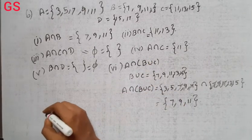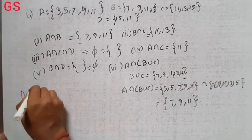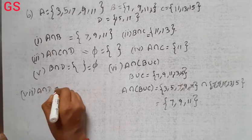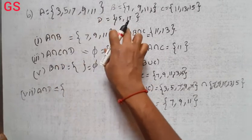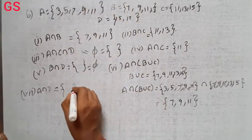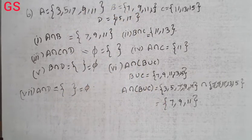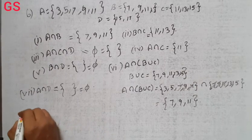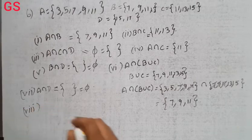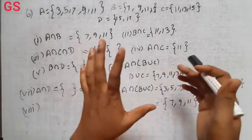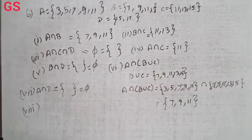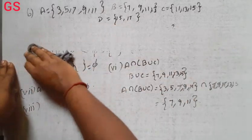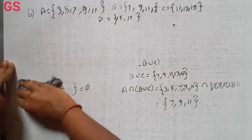Next is seventh subdivision. A intersection D. Common term is here. So empty set, this is equal to phi. Next is 8th one.